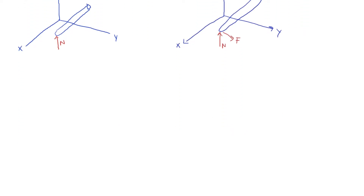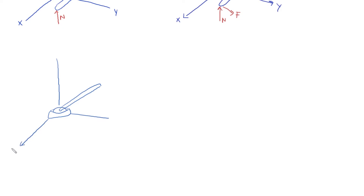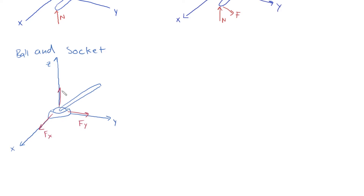The next thing we're going to look at is the ball and socket. We have a ball like that, with a rod connected to it. That's the ball, and this is the socket. We can define our axes: X, Y, and Z. This ball allows the rod to rotate freely in any direction. The only thing it cannot do is translate in space, so there's a reaction force Fy going this way, Fx going this way, and Fz going that way.